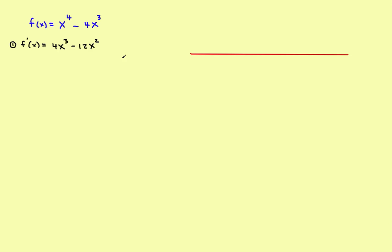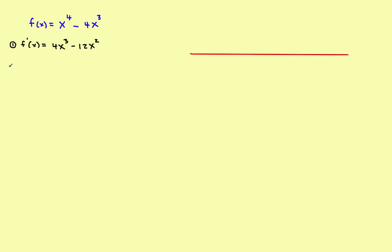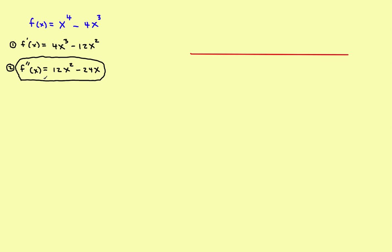When working with concavity, you're really interested in the second derivative. Step two: find the second derivative. Again using the power rule, f''(x) = 12x squared minus 24x. There is the second derivative.